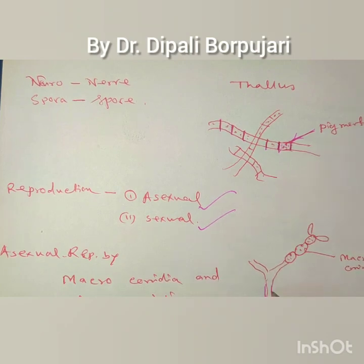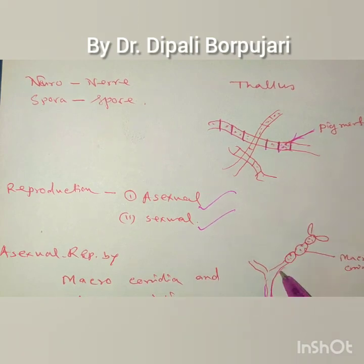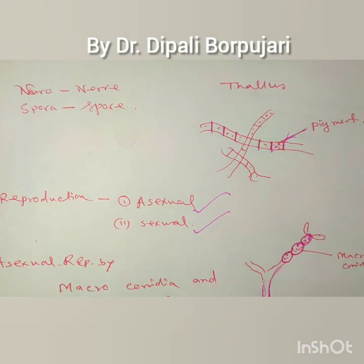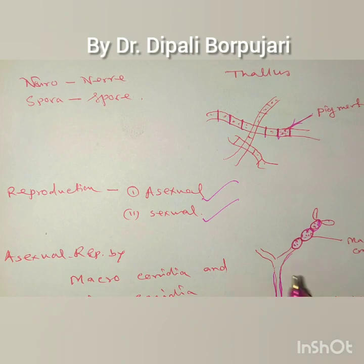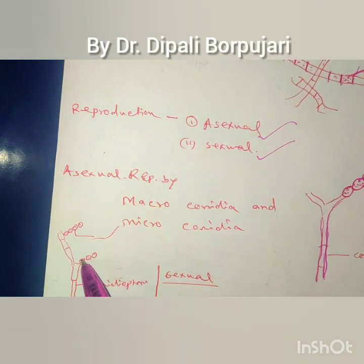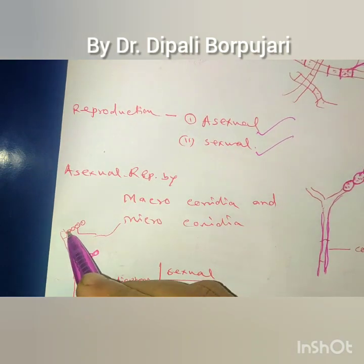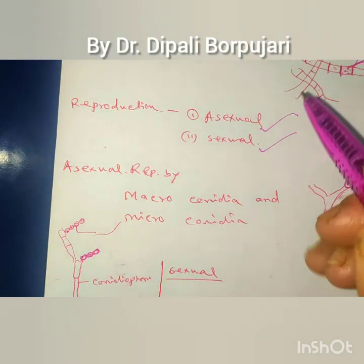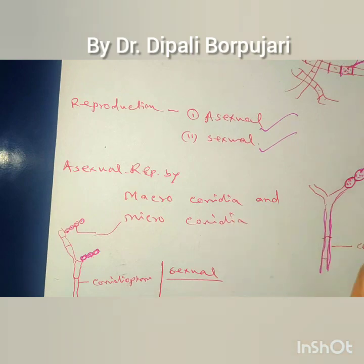The conidiophore is the mycelium on which the conidia are borne. Microconidia are multinucleate. Asexual reproduction takes place by means of two types of conidia: one is macroconidia and the other is microconidia.